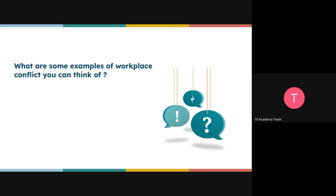Before we start talking about how we can mitigate conflicts and handle them when they come up, can someone tell me some examples of workplace conflicts? Maybe it's happened to you. One example given: taking a lot of tea in the office, meaning one person finishes the tea and doesn't refill it, which causes conflict with other workers.